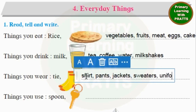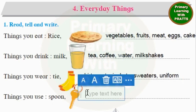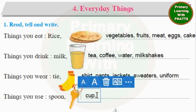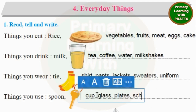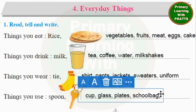Things you use: Spoon, Key. What else do we use? Cup, Glass, Plates — we are thinking of all utensils now. School bag. You must always remember School bag is one word — if you write two words, it is wrong. And you can write anything else that you use.